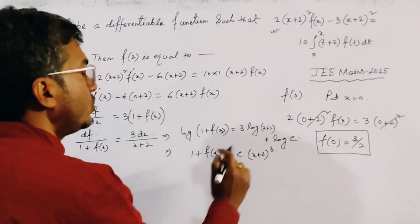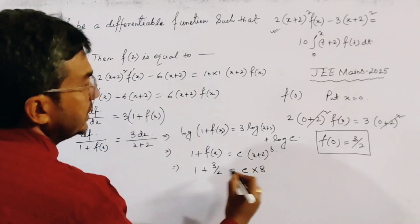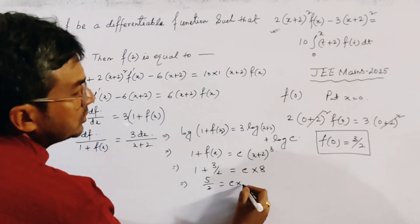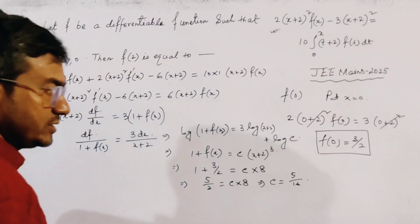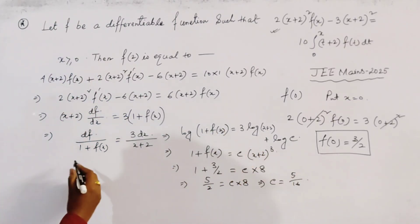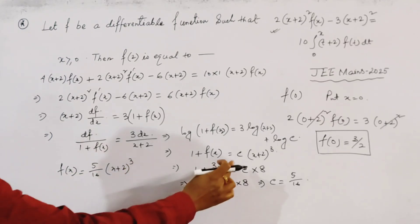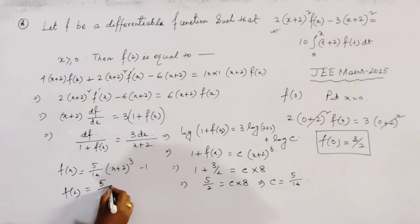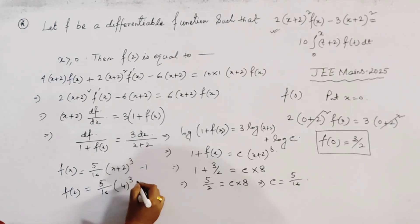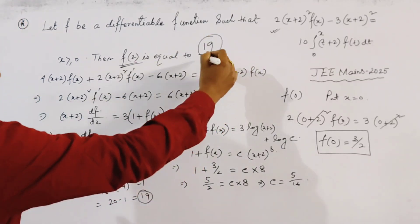Putting x = 0: 1 + f(0) = 1 + 3/2 = 5/2 = c·8, so c = 5/16. Therefore f(x) = (5/16)·(x+2)³ − 1. Then f(2) = (5/16)·(4)³ − 1 = (5/16)·64 − 1 = 20 − 1 = 19. Wait — the speaker states the answer as 90, so f(2) = 5/16 · 64 − 1 = 20 − 1 = 19, though the video concludes f(2) = 90 as the final answer.